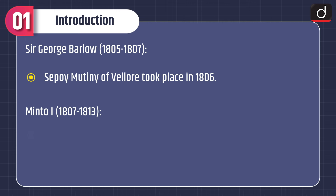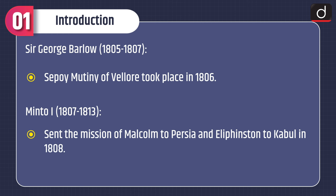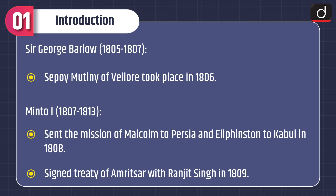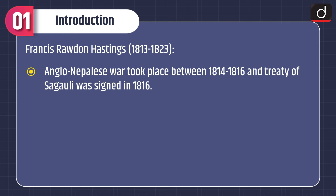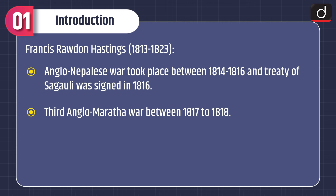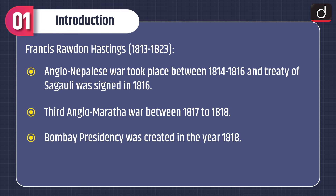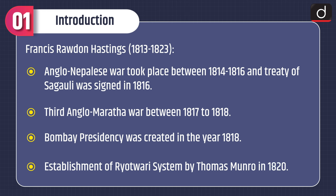Minto I, 1807–1813: sent the missions of Malcolm to Persia and Elphinstone to Kabul in 1808; signed the Treaty of Amritsar with Ranjit Singh in 1809. Francis Rawdon Hastings, 1813–1823: the Anglo-Nepali War took place between 1814 and 1816 and the Treaty of Sagauli was signed in 1816. The Third Anglo-Maratha War took place between 1817 and 1818. The Bombay Presidency was created in 1818. The Ryotwari system was established by Thomas Munro in 1820.